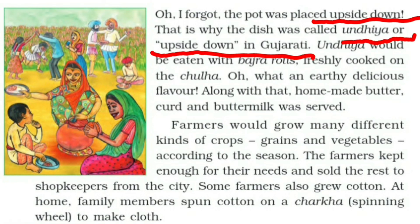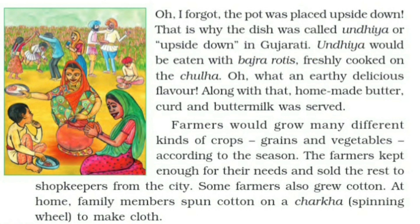'The pot was placed upside down — that is why the dish was called undiya, meaning upside down in Gujarati. Undiya would be eaten with bajra rotis, freshly cooked on the chula.' Chula means fire. 'What an earthy, delicious flavor! Along with that, homemade butter, curd, and buttermilk was served.'